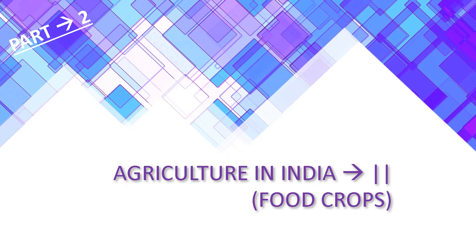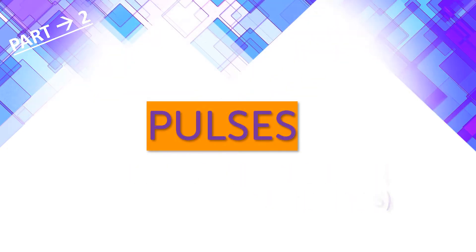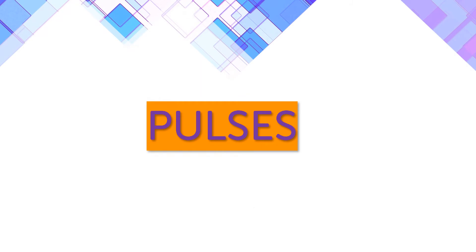Good morning students. Today we start with the second part of the chapter on Agriculture in India - Food crops, that is Pulses and Millets. First of all, we will talk about Pulses, which in Hindi we call Daal.